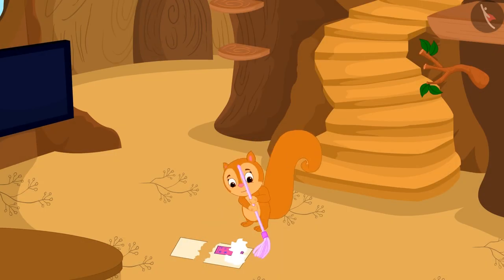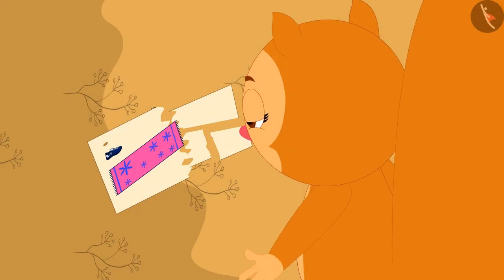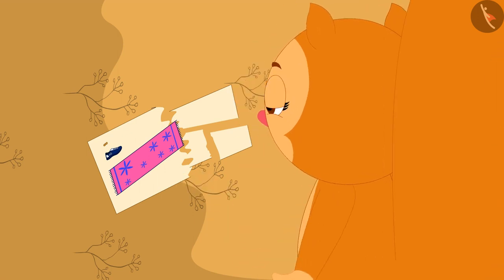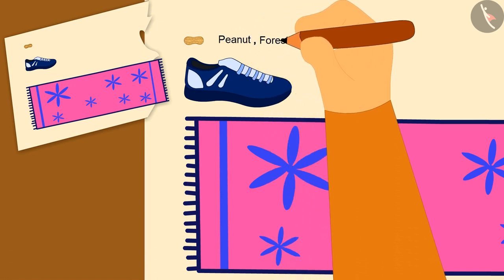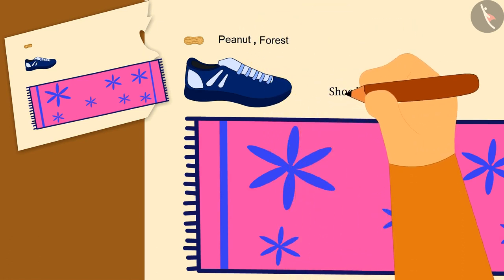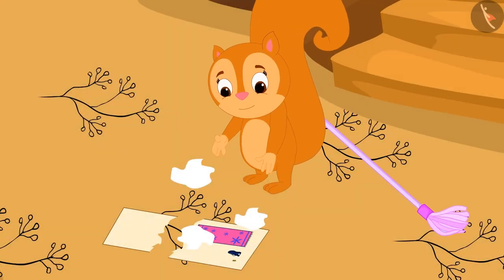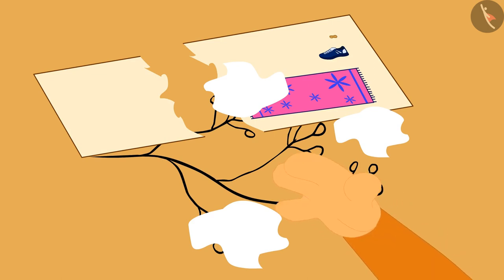While Chanda was cleaning her house, the paper was accidentally torn. Now Chanda is unable to understand which measurement belongs to what. Chanda quickly wrote the names of the objects and places on another paper, then picked up one of the torn pieces.